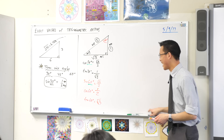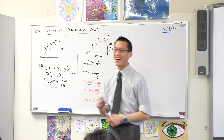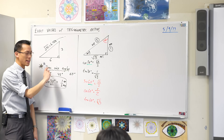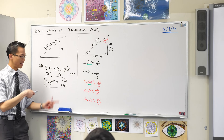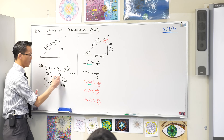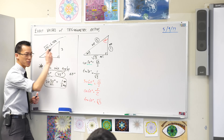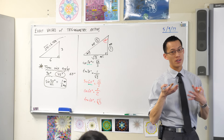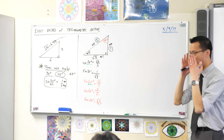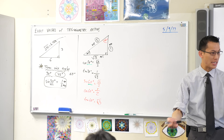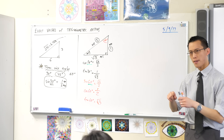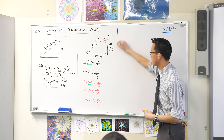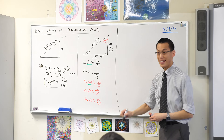Now, I said to you there were three angles that have nice ratios. I've done 30, I've done 60, so what's left? I want you to think about this for a second — 45 is special. It's unique because 45 is its own complement. 45 plus 45 gives you 90. So if it's its own complement, then what kind of triangle will we get? We're going to draw a new one. It's going to be isosceles.